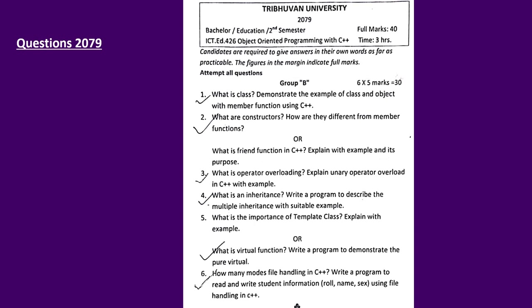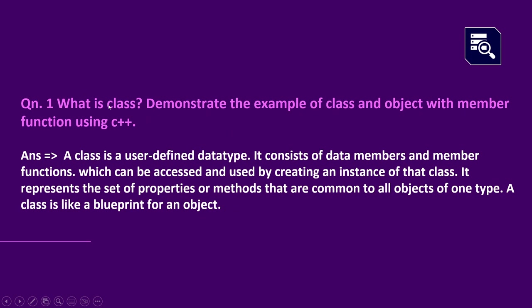Question number 1: What is a class? Demonstrate the example of class and object with member function using C++. A class is a user-defined data type. It consists of data members and member functions which can be accessed and used by creating an instance of that class. It represents the set of properties or methods that are common to all objects of one type.